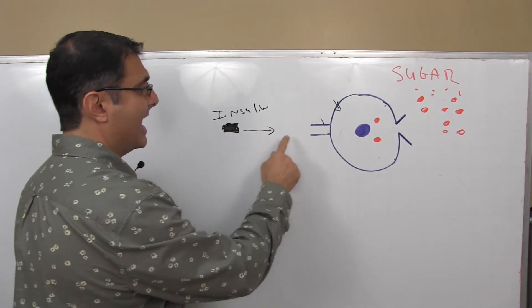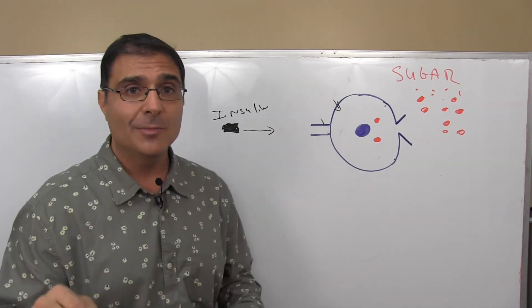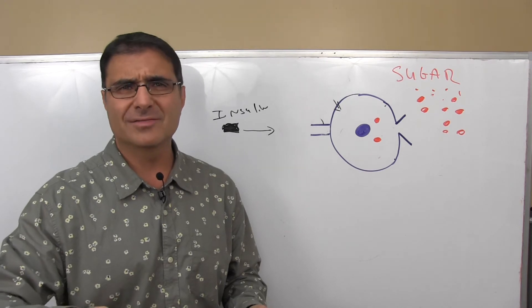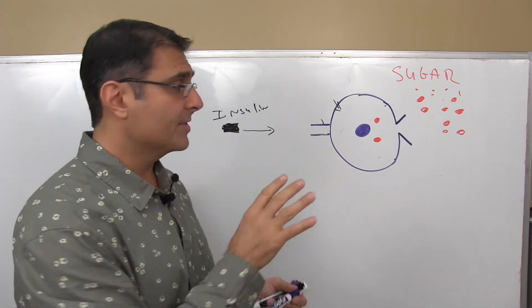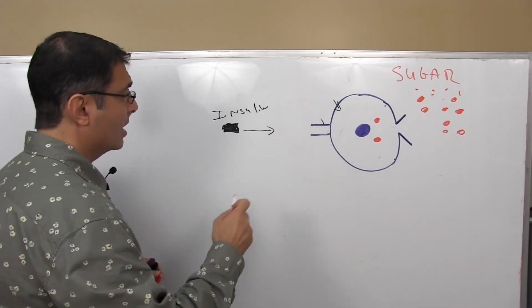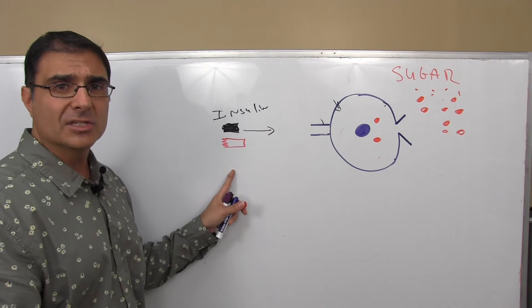So remember the insulin has to get into that receptor. Well, here, do you ever take a key, put it into a lock and it fit, but you went to turn the lock and, oh, not the right key, right? Similar thing happens here. You can have toxins that look a lot like insulin. See this toxin is going to look a lot like insulin. They're similar.